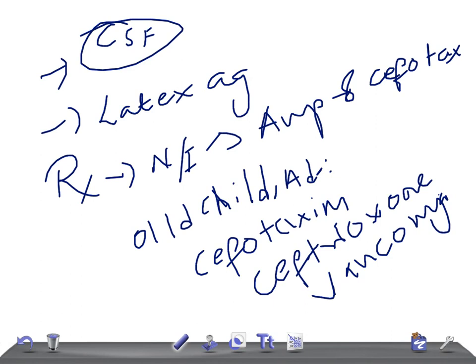What about prevention? The capsule polysaccharide of the strains Y, W-135, C, and A. Prophylaxis as I said for close contacts is rifampin. You can use cefotaxime also. I hope you got an idea about Neisseria meningitidis. Thank you so much for watching this video. Take care.